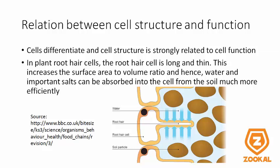Cell structure is strongly related to function. As cells differentiate and carry out different tasks, the cell structure must change as well. In plant root hair cells, for example, the root hair cell is long and thin, and this increases the surface area to volume ratio, which is an important concept we will cover in future videos. Hence, water and important salts can be absorbed into the cell from the soil much more efficiently. The long extension of the root hair cell allows it to absorb water and minerals more efficiently into the cell.